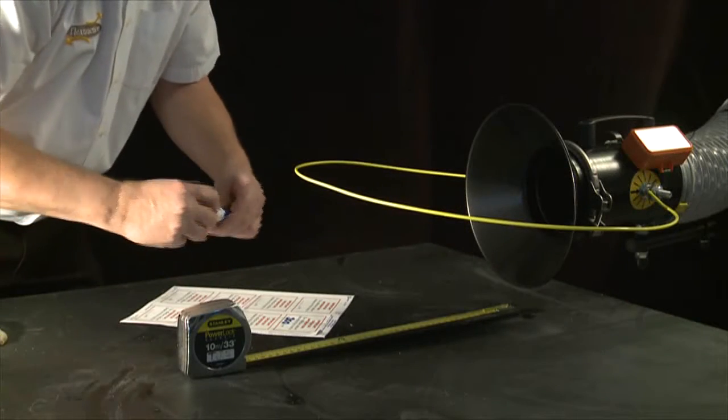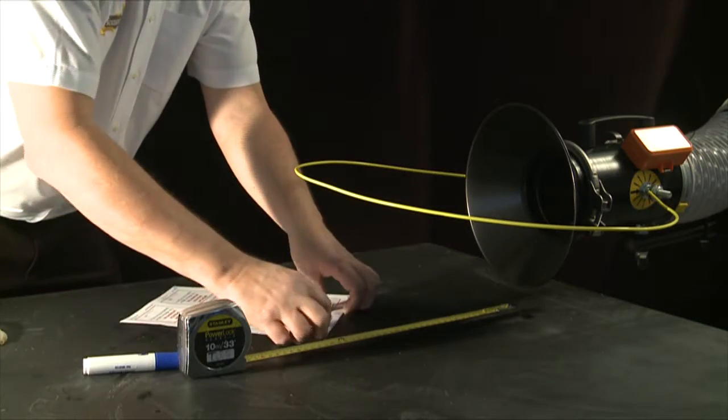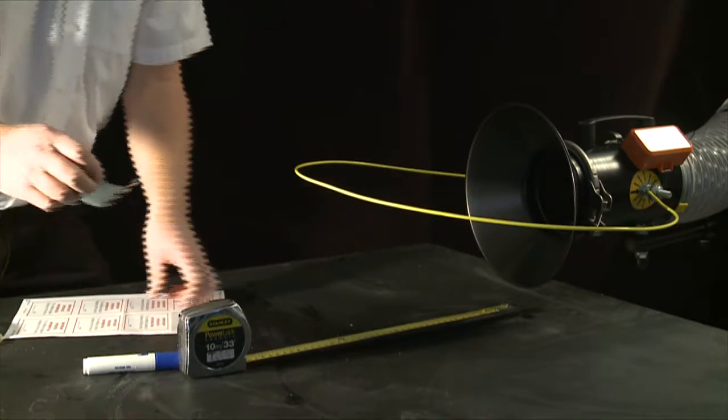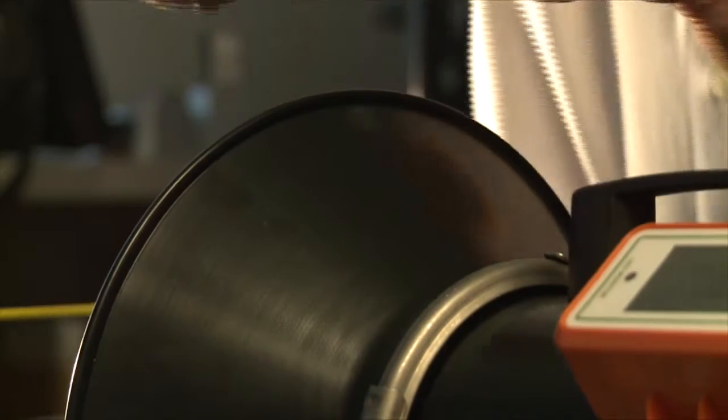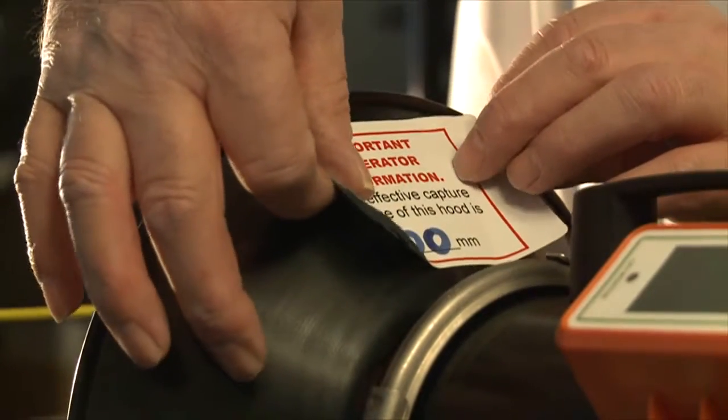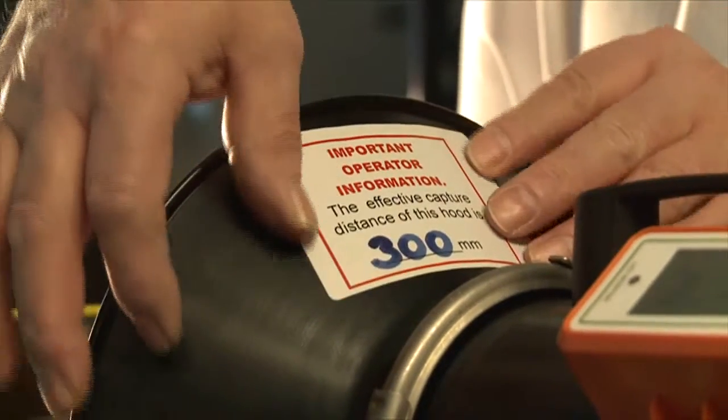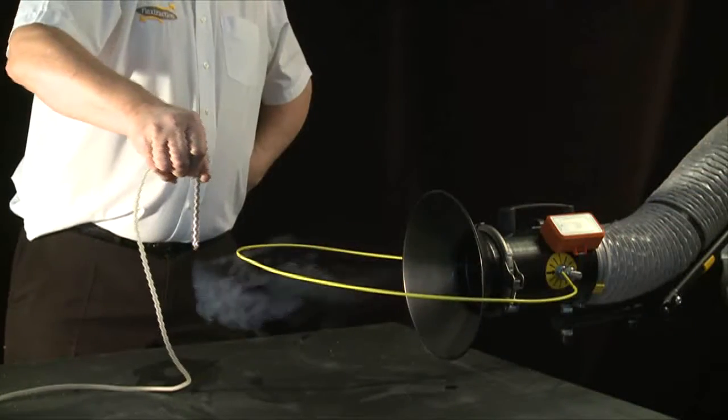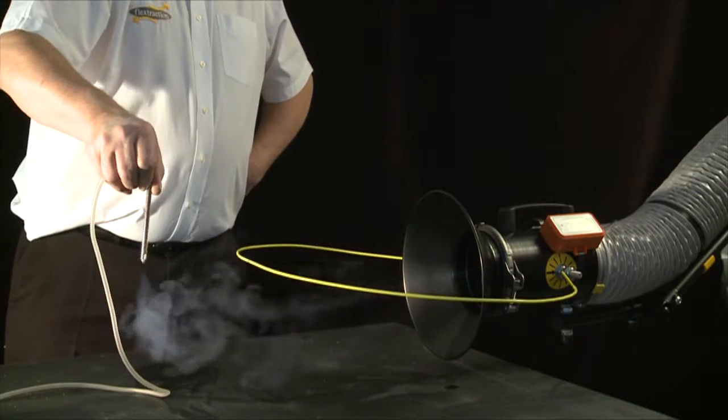The capture hood is marked with the effective capture distance for this process. This is almost always smaller than the user expects, and it's due to the fact that the air velocity falls very rapidly as you move away from the face of the capture hood.